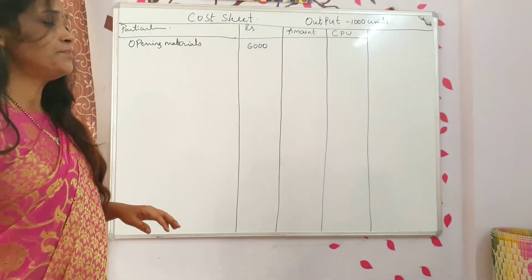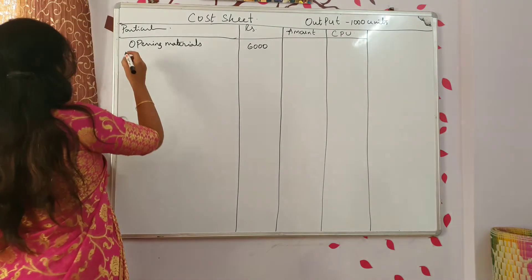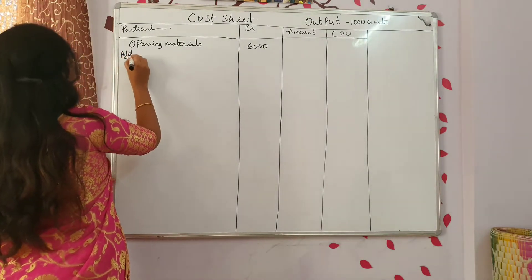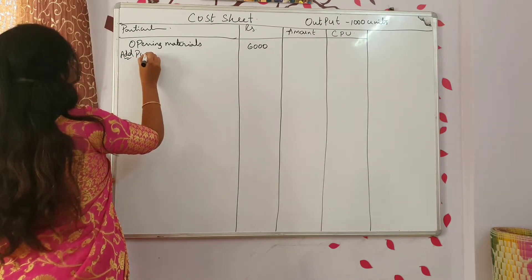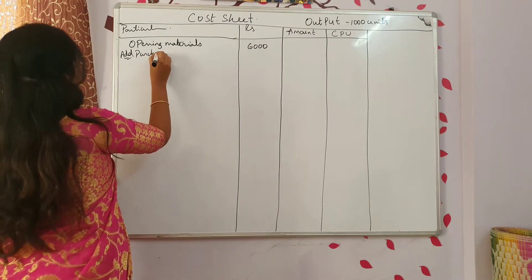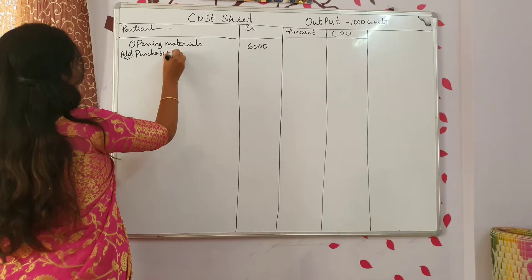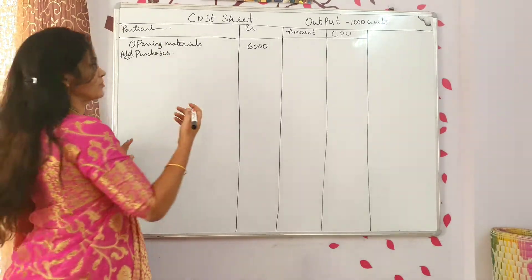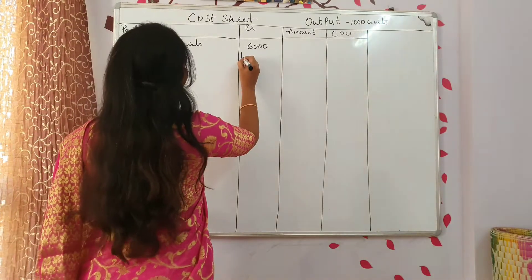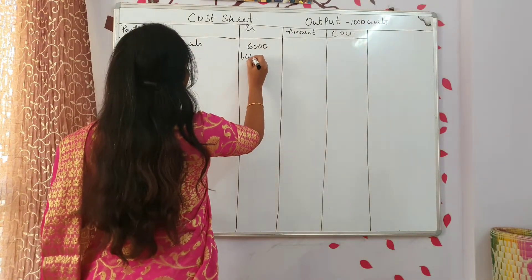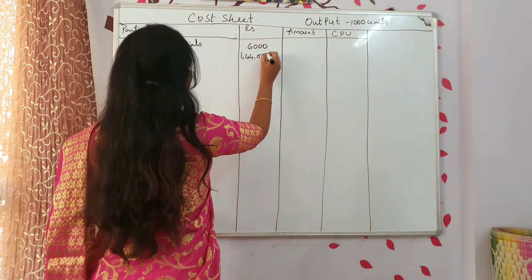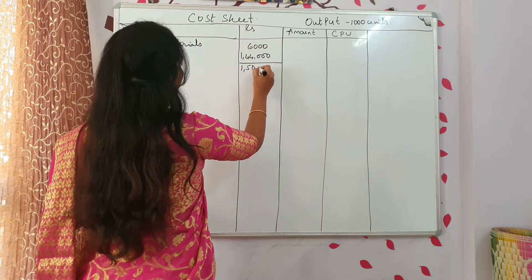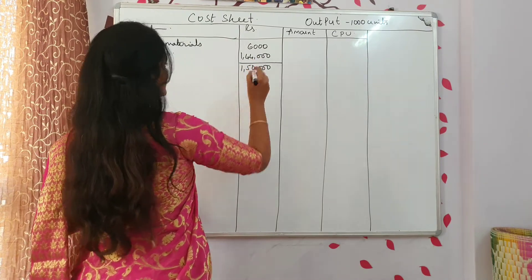Any purchases are there? Add purchases. Purchase of materials in January 2014: 1,44,000. So the total is 1,50,000.